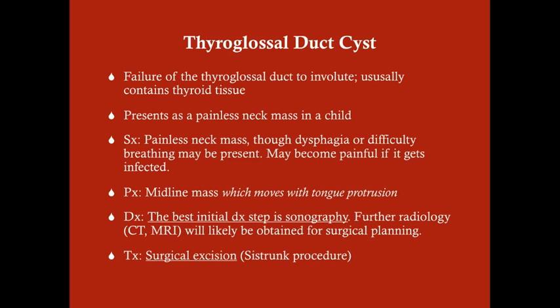The thyroglossal duct cyst is a failure of the thyroglossal duct to involute. The thyroglossal duct is a fetal structure that generally involutes around the 9th or 10th week of fetal development. The cyst will often contain thyroid tissue, which can be clinically relevant. Usually, it presents as a painless neck mass in a child, becoming relatively obvious around two or three years old. It can cause symptoms if it gets very big—causing problems with breathing or swallowing—or if it becomes infected, in which case it will be painful.